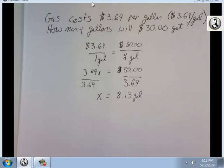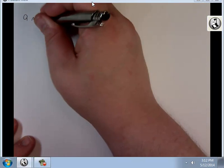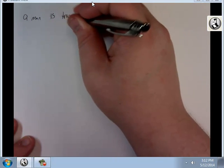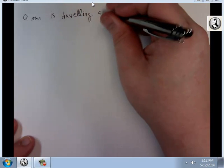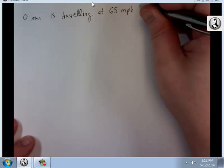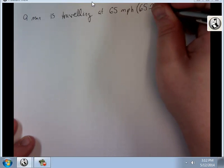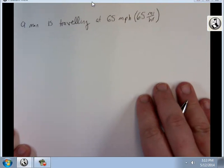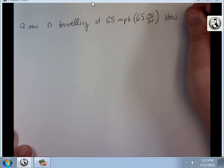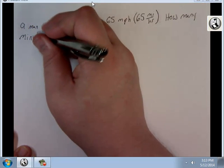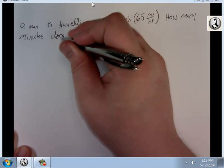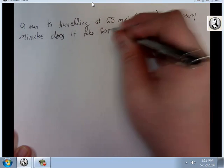All right, we're going to do one more problem in this video. And I'm actually just going to pull to a new page to make everything easier. Here, a man is traveling at 65 miles per hour. Remember, that's 65 miles per hour.